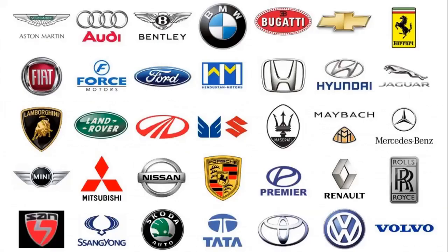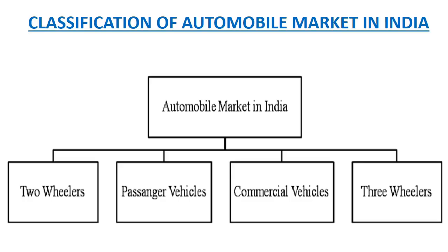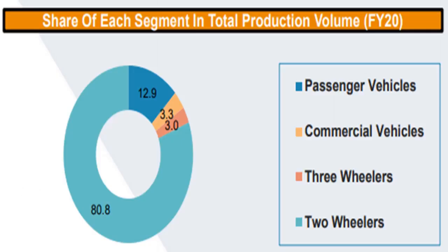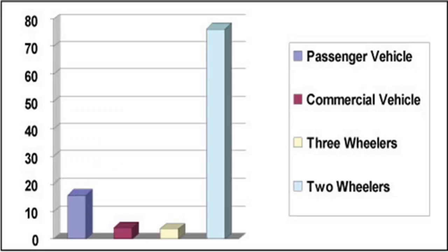Some of the major players of the Indian automobile market are shown on screen. The Indian automobile market can be classified as two-wheeler, passenger vehicle, commercial vehicle, and three-wheeler. The two-wheeler market dominates with 80.8% of market share of total production volume in India, passenger vehicles account for 12.9%, commercial vehicles 3.3%, and three-wheelers 3.0%. Two-wheelers and passenger vehicles dominate the domestic Indian automobile market, accounting for combined sales of over 20.1 million vehicles in financial year 2020.